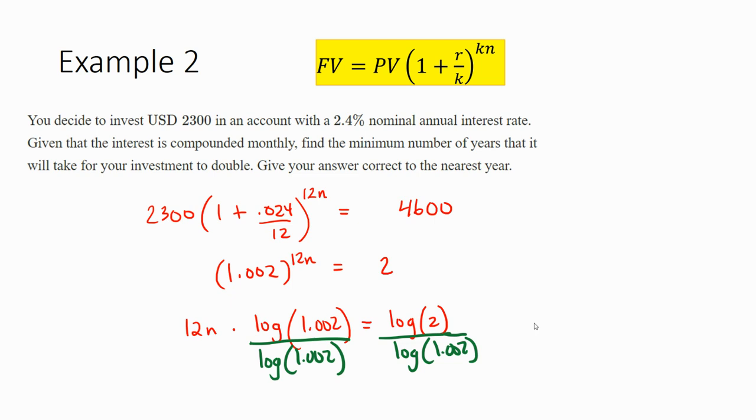So now we can divide both sides by log of 1.002, and that will cancel it out on the left, leaving us with 12N equals about 346.92. If you do log 2 divided by log of 1.002 on your calculator. And the last step would be just to divide by 12. And so we get about 28.91 years, roughly 29 years, although it would happen a little bit before the 29th year.